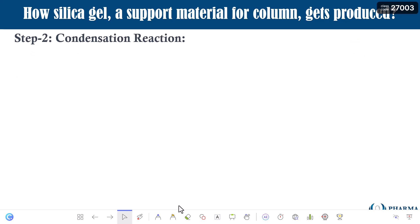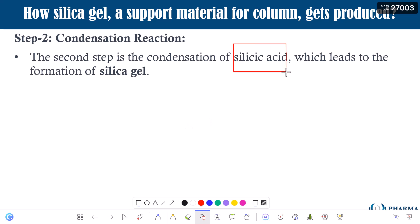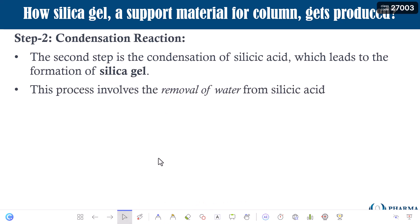This is the first step where silicic acid gets formed because of hydrolysis. Then comes step number two: the condensation reaction. Whatever silicic acid is formed in the hydrolysis step will further get condensed, and the condensation of silicic acid leads to the formation of silica gel.